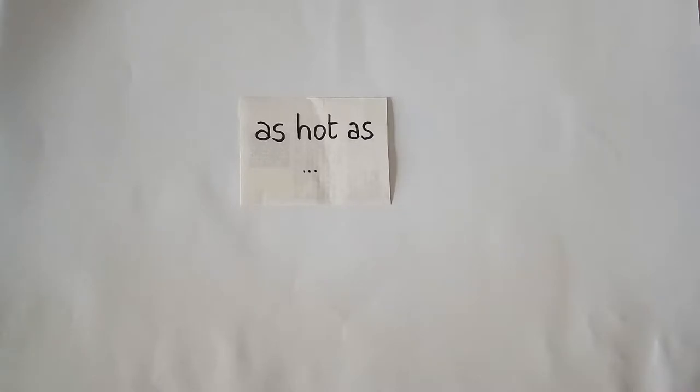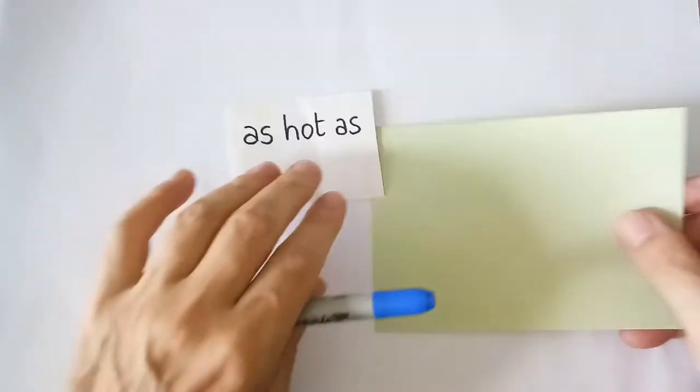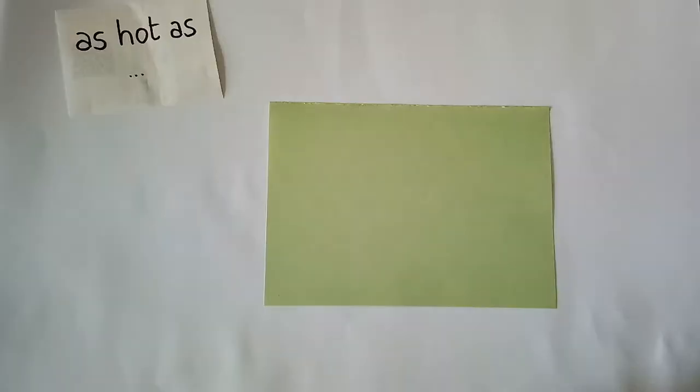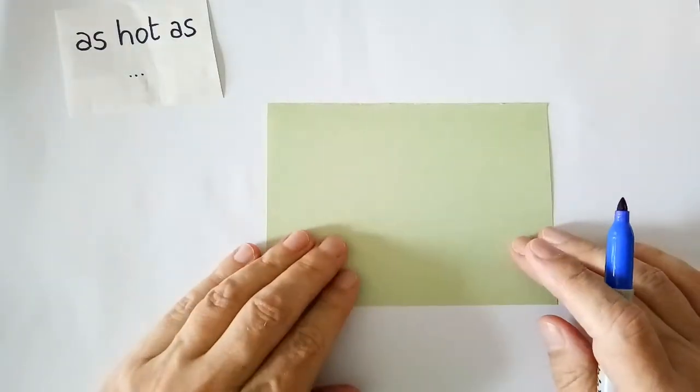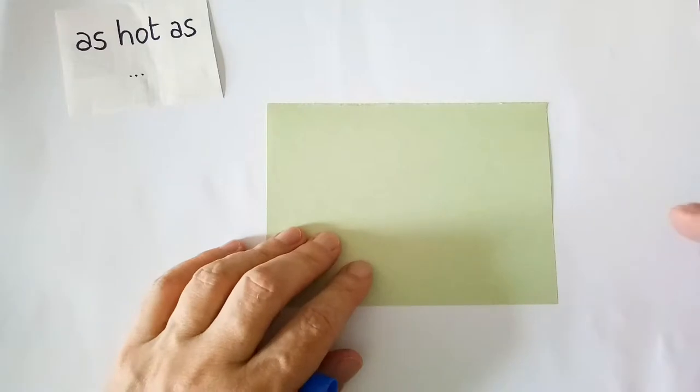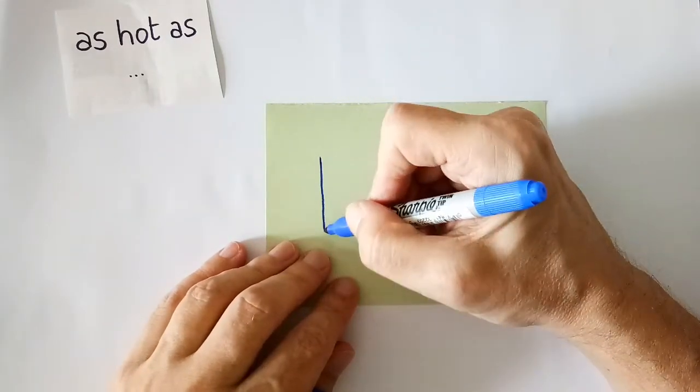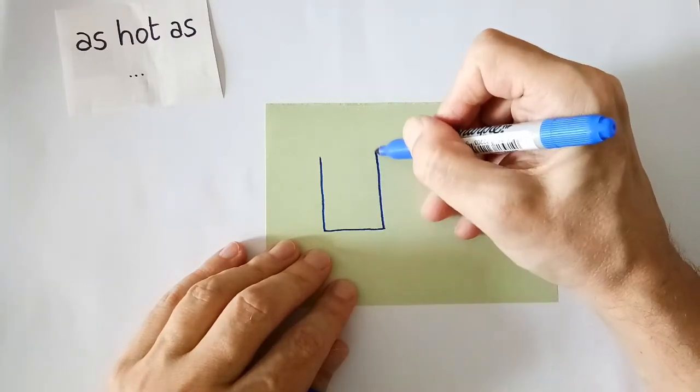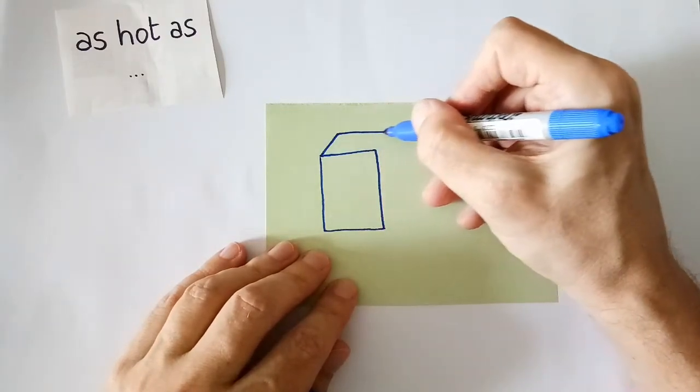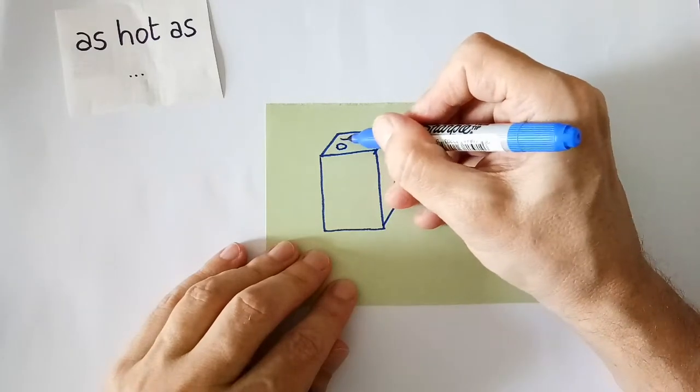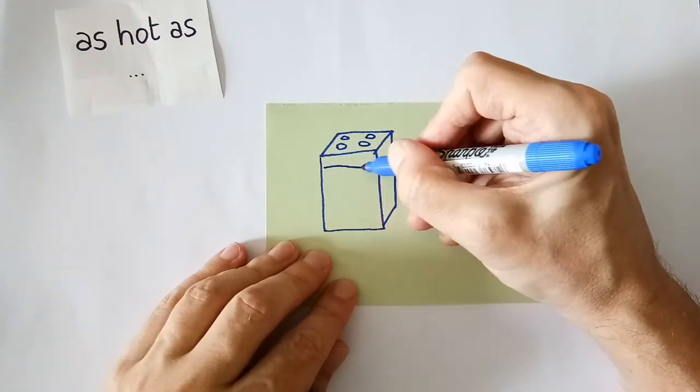A place that can be very hot. Let me try to draw this place. Actually, places, because there are two possibilities, even more sometimes with similes. First of all, we have this place. Can you already see what it is? Okay, now we don't need the top, we need this here. What is this machine?